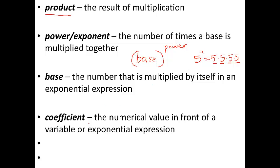And lastly for vocab is the coefficient. It's a numerical value in front of a variable or expression. So if I have 3x squared, this is my coefficient. It's just the numerical part in front, and that's pretty much all there is to it. I could have negative 2x to the 3rd, the negative 2, that's my coefficient. So the coefficient could be negative.